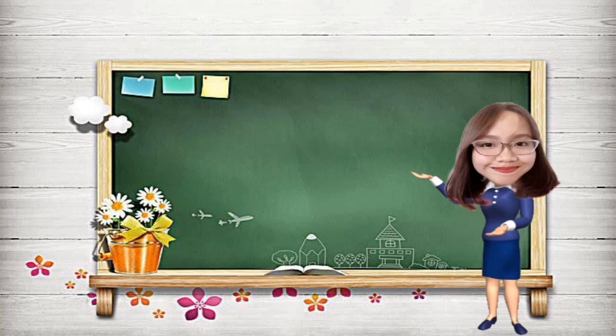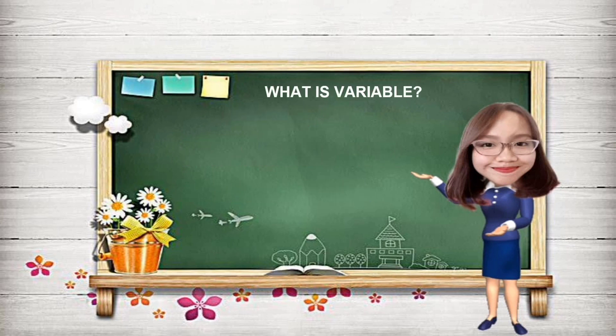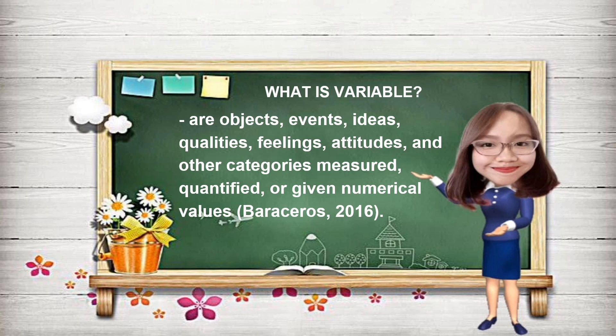Our topic today is about the kinds of variables and their uses. First, what is a variable? According to Trinidad (2020), variable is derived from the verb 'vary,' which means that variables vary from one entity to another. While Baraceres (2016) said that a variable is any factor or property that a researcher measures, controls, and/or manipulates. It is also defined as changing qualities and characteristics of persons or things like age, gender, intelligence, ideas, achievements, confidence, and so on that are involved in your research study.